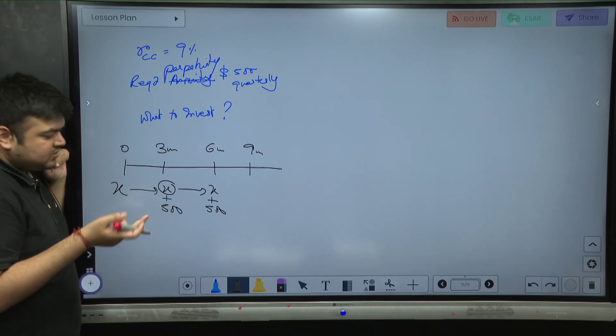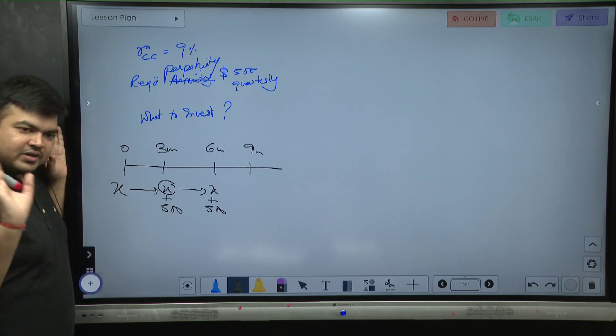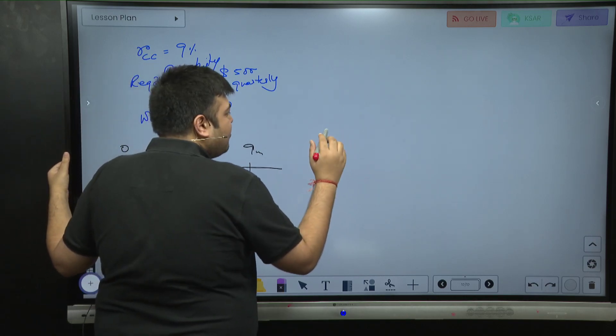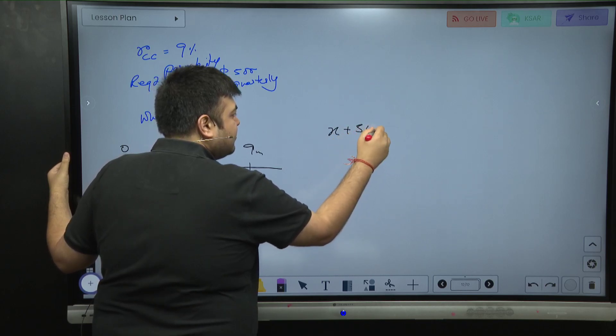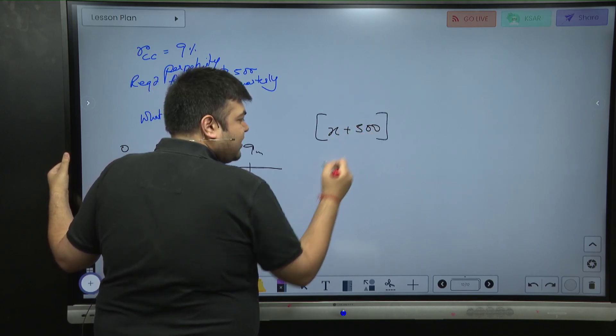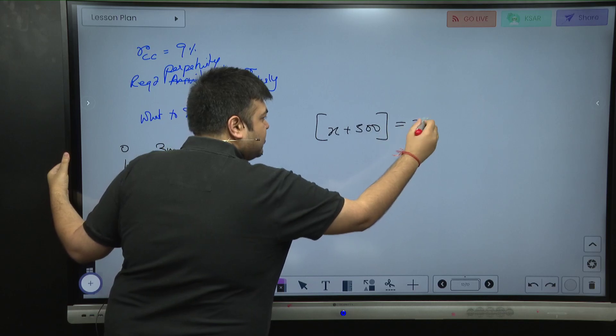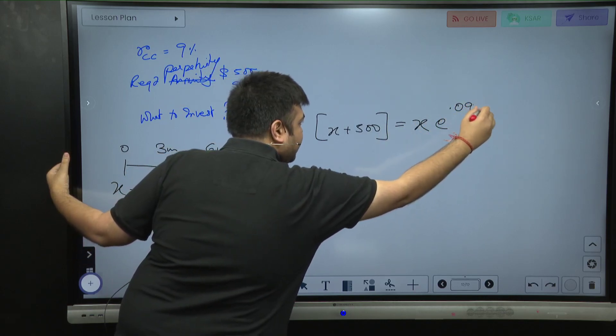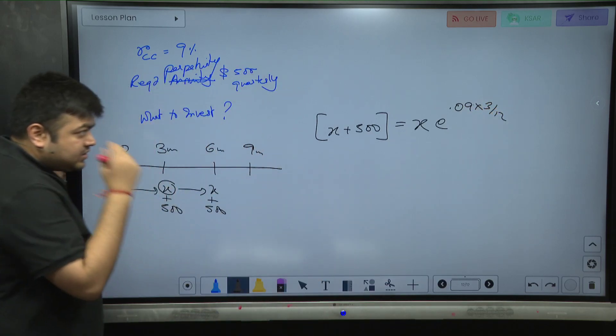Again this will become x plus 500, and I will take out this 500. This is what happens in perpetuity. So the amount has to become x plus 500, which is the future value, equal to present value x into e to the power 0.09 into 3 by 12.